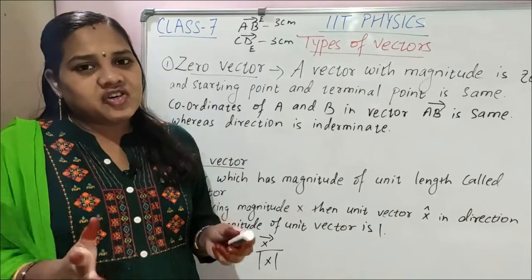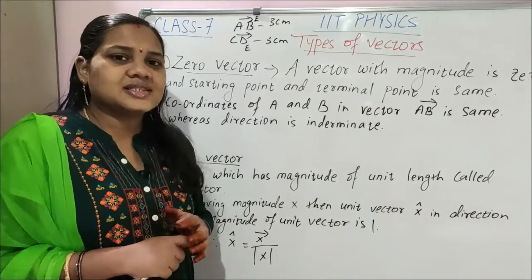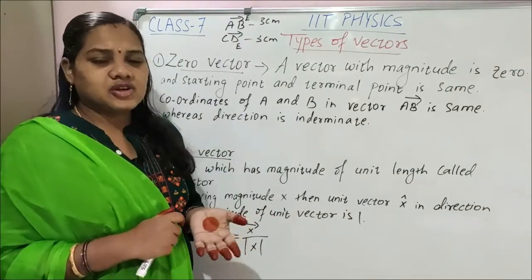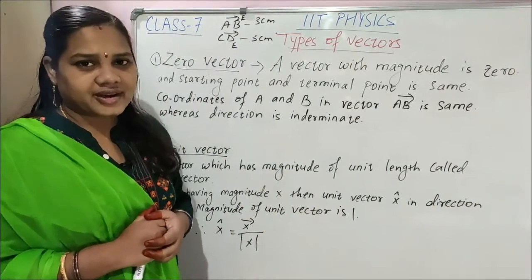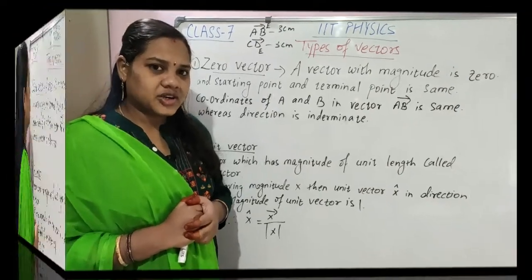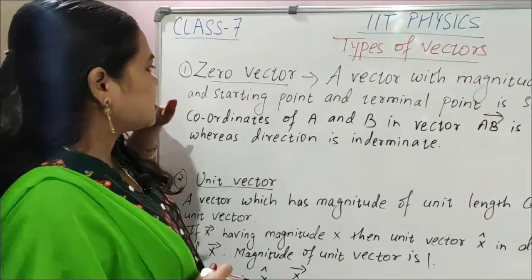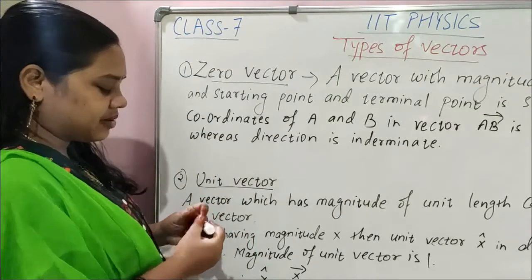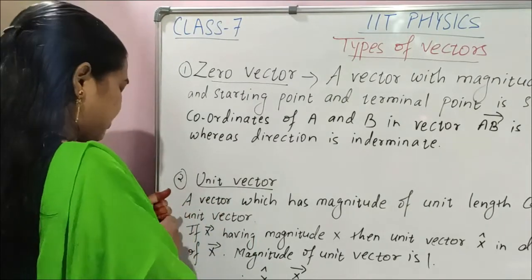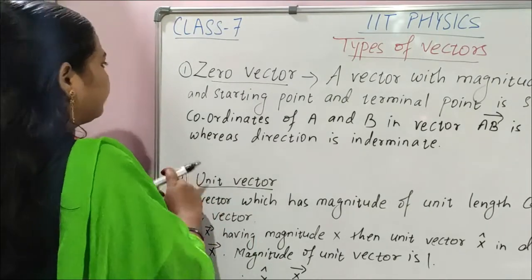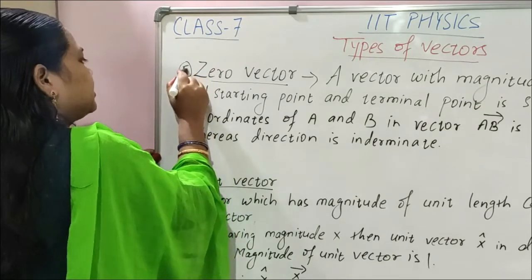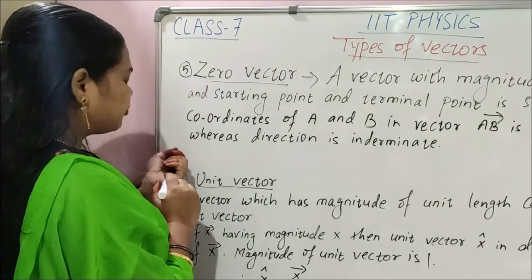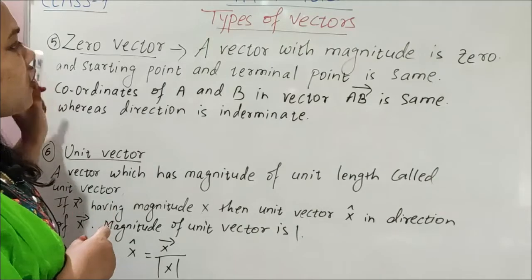Clear children? These are the four types we discussed in the last class. Now today we are going to discuss the next types of vectors. So let's start today's topic. First is zero vector — this will come as the fifth one — and the sixth one follows. So fifth is zero vector.